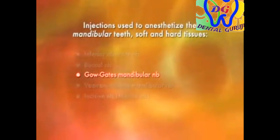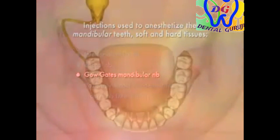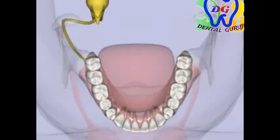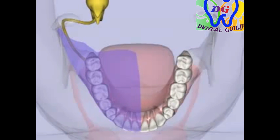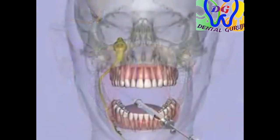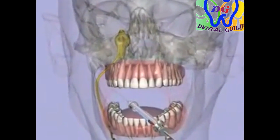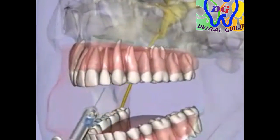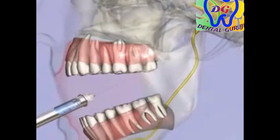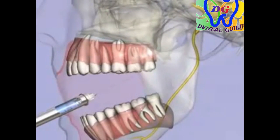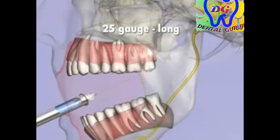The Gow-Gates mandibular block provides pulpal anesthesia to the mandibular teeth, the buccal soft tissue and bone, the anterior two-thirds of the tongue and the floor of the oral cavity, the lingual soft tissue and periosteum, as well as the skin of the zygoma, the posterior portion of the cheek, and the temporal regions. A 25-gauge long needle is recommended.